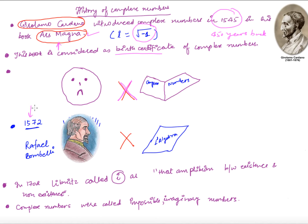After almost 30 years, a new fellow called Bombelli, in 1572, did some calculations with the square root of negative numbers in his book 'L'Algebra.' But again, like Cardano, he thought he was doing something wrong — these were quantities without any physical interpretation. So he also discarded these numbers.